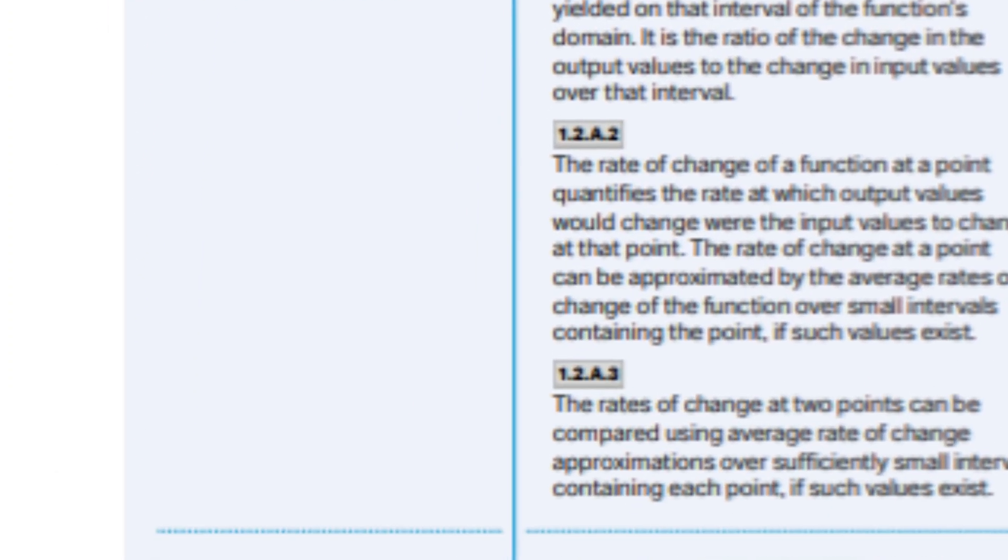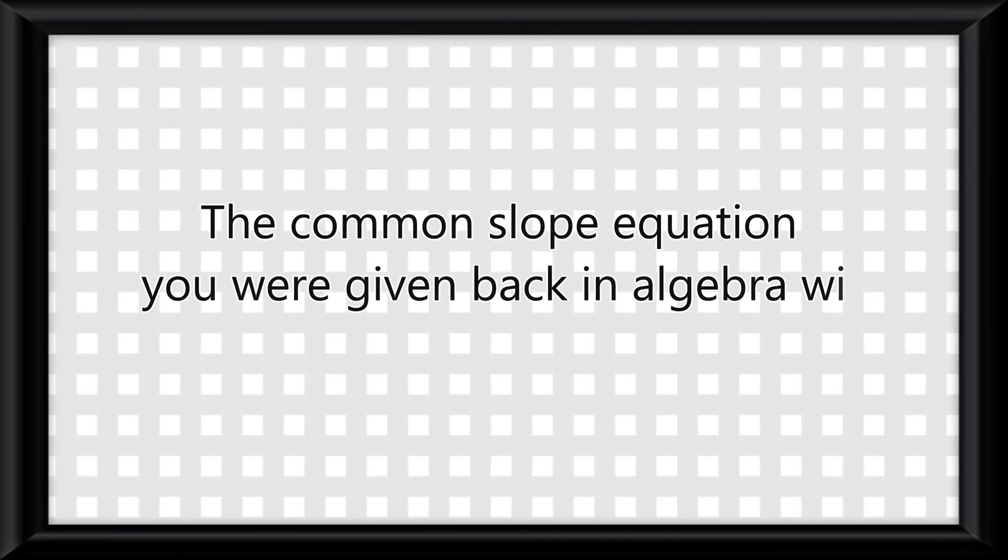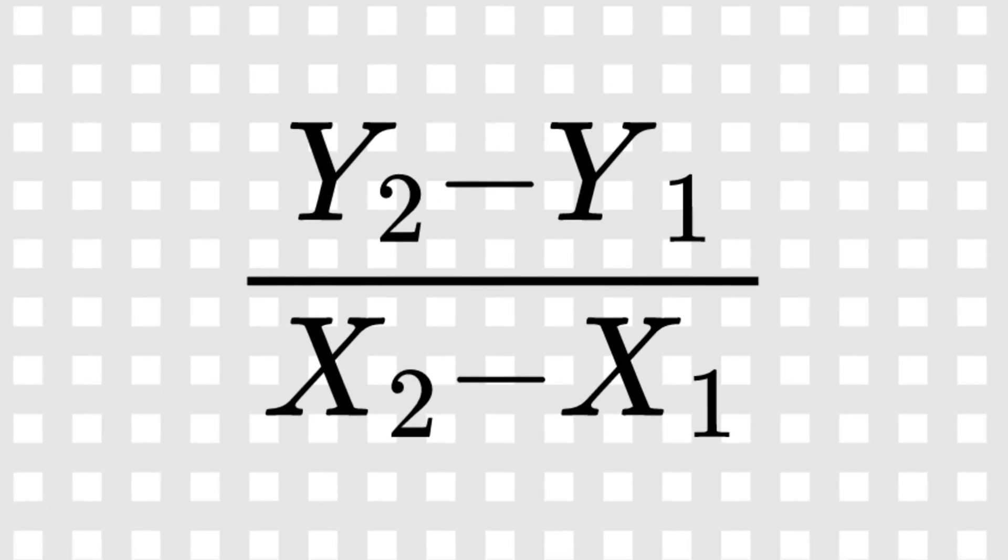First, how to find them, and then how to describe them. Rate of change is simply a graph's slope. The common slope equation you were given back in algebra will suffice to find it, y2 minus y1 over x2 minus x1.